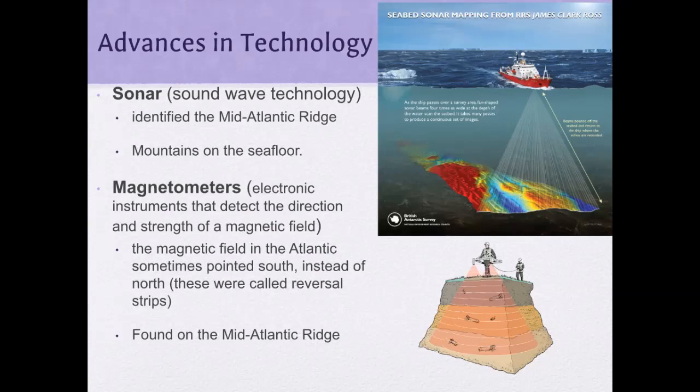There's also something called magnetometers — electronic instruments that detect the direction and strength of the magnetic field. The magnetic fields in the Atlantic sometimes pointed south instead of north.